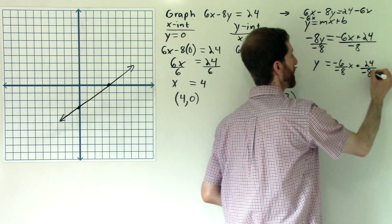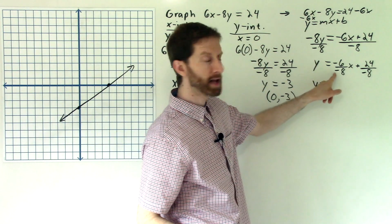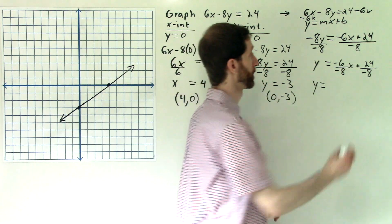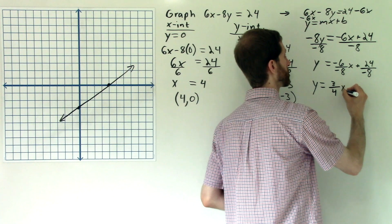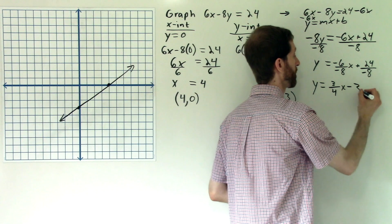Splitting it up. And now we'll simplify it down. So y is equal to, well, negative divided by negative is a positive, but 6 and 8 can each be divided by 2. So this fraction reduces to 3/4x plus, well, this is going to be 24 divided by negative 8 is negative 3. So minus 3.